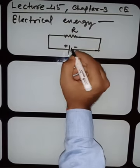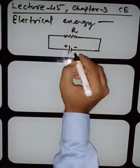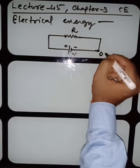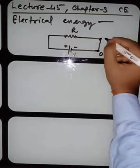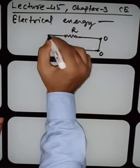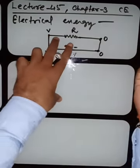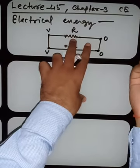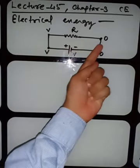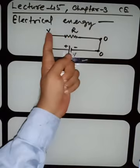This battery releases charge and that charge does some work at some potential. If the potential of this battery is V, then the potential at the negative terminal is 0 and at the positive terminal it is V. As you move across the resistor, the potential drops across it. That's why you again have potential 0 on the other side.